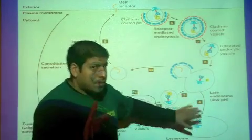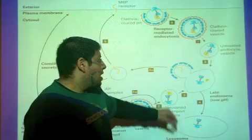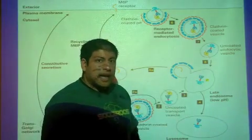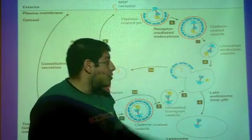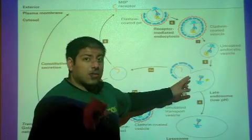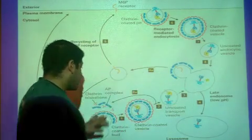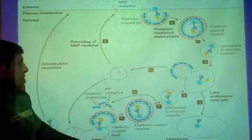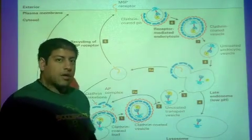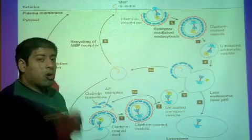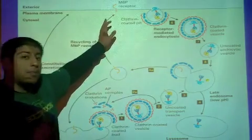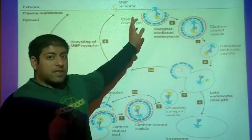Now the M6P receptor is still not done traveling. After we have separation in the late endosome, the M6P receptor gets recycled, and it can get recycled back to two places. Either back to the trans-Golgi network to pick up other enzymes that are going through this process, or it can also travel back up to the plasma membrane of the cell.